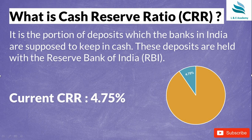CRR is the portion of the deposits which the banks in India are supposed to keep in cash, and these deposits are held with the Reserve Bank of India. In simple words, all the money which the banks have, they have to keep a certain portion of cash with RBI. This is called Cash Reserve Ratio. Currently the Cash Reserve Ratio is 4.75 percent.